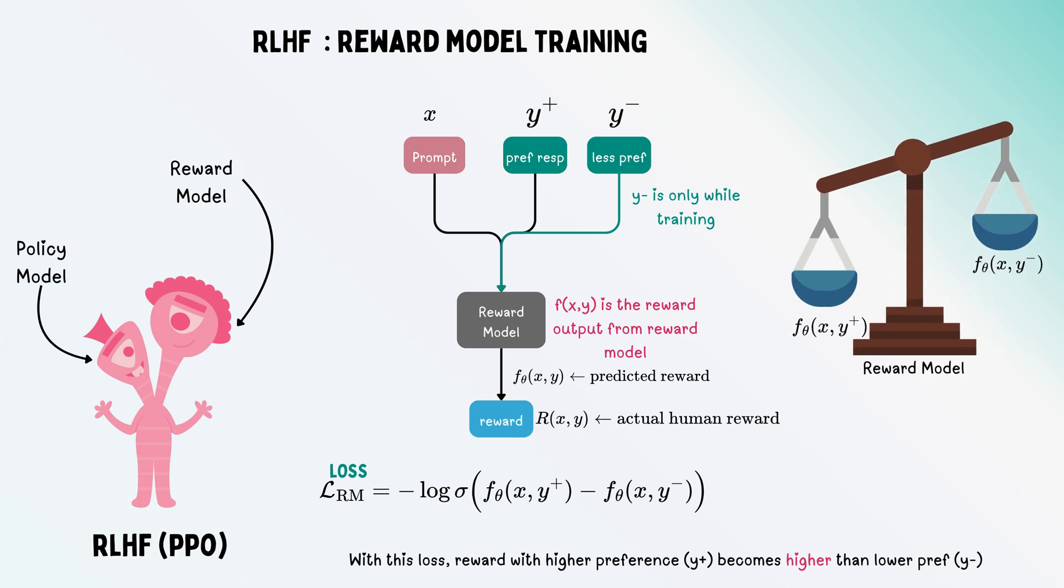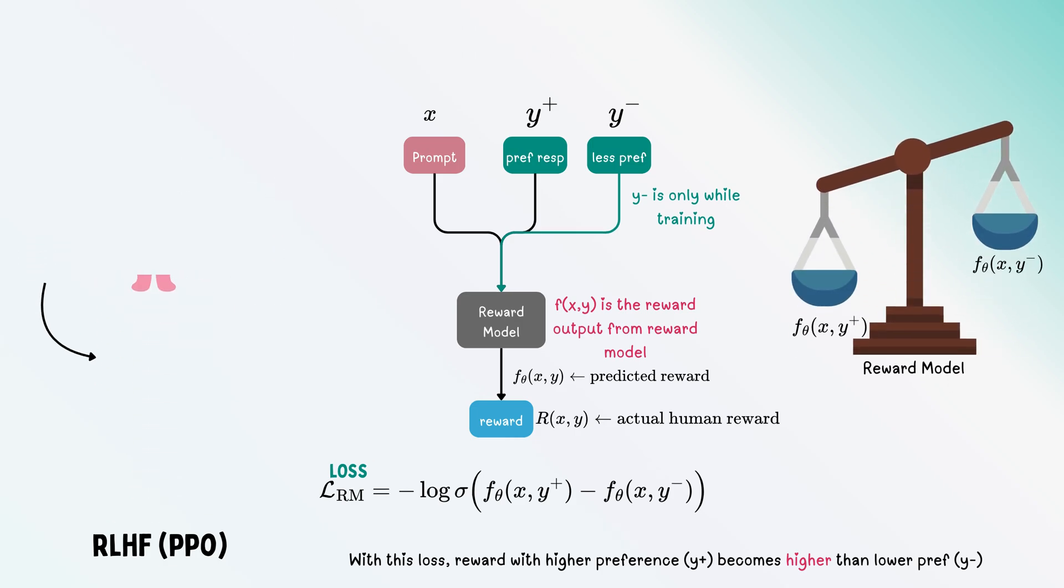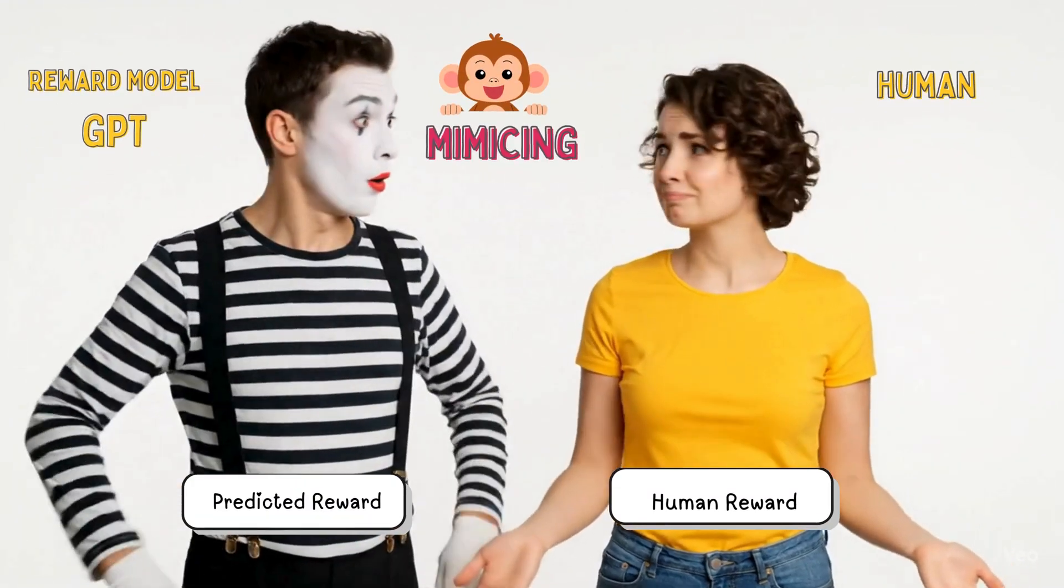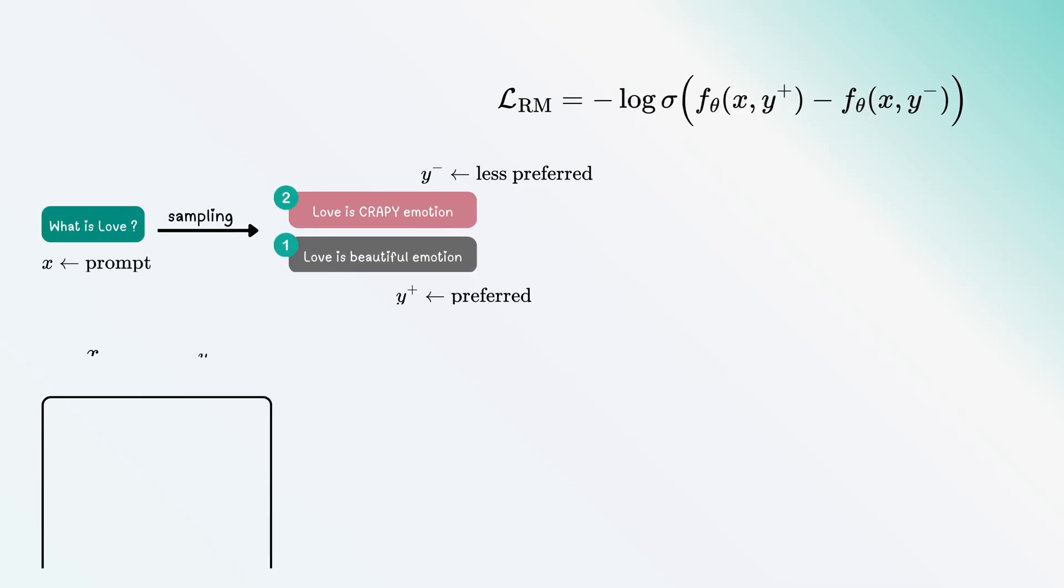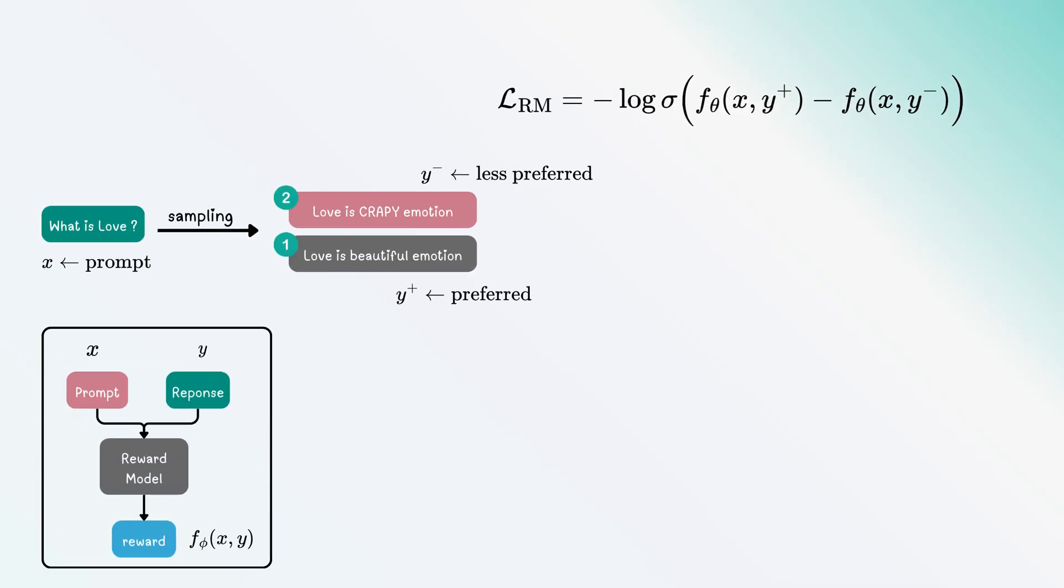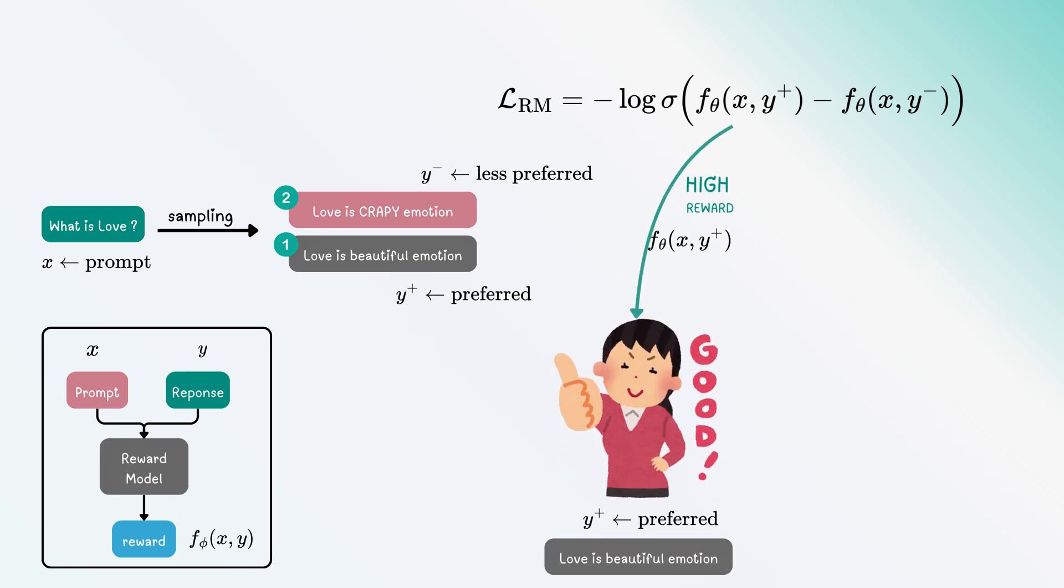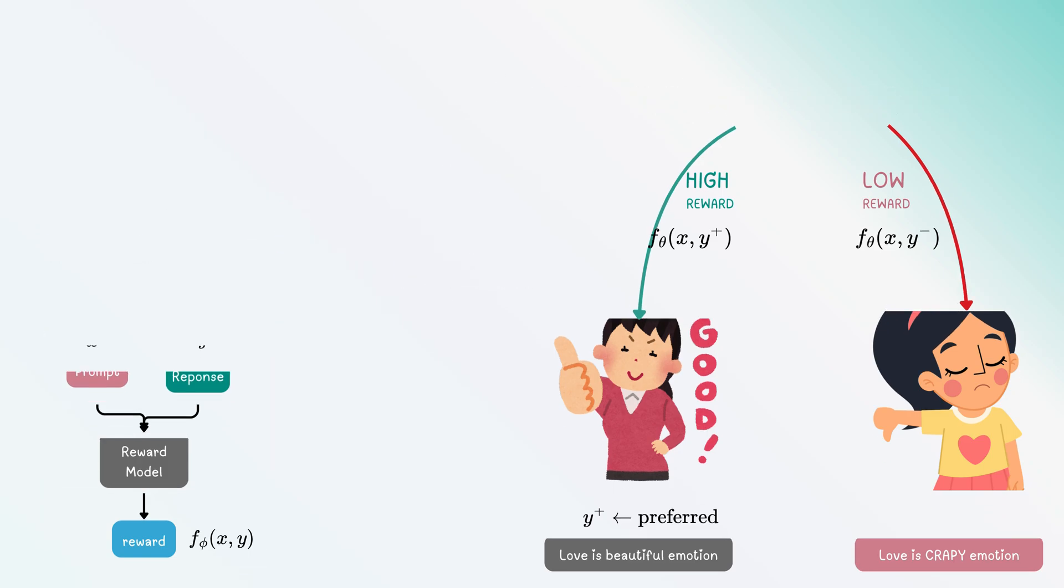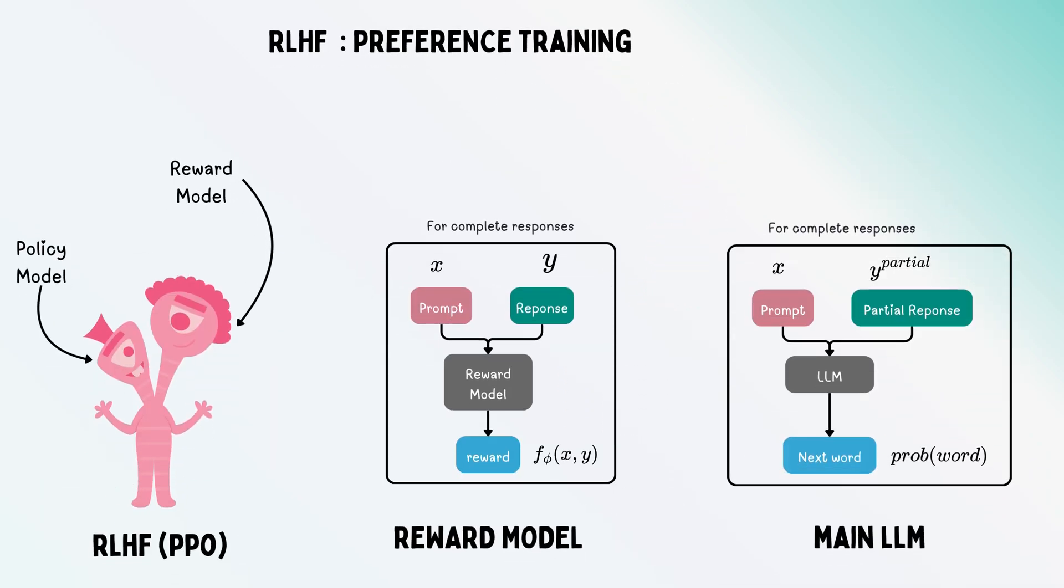This mimics actual human reward. The process uses a log loss where the reward value for positive responses should be higher than negative ones, as you can see in the loss equation. The next step is preference training.